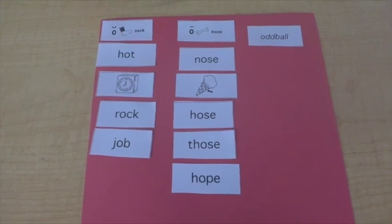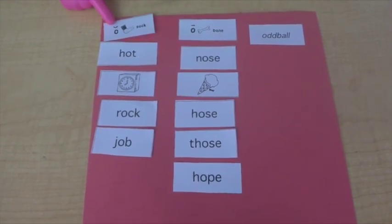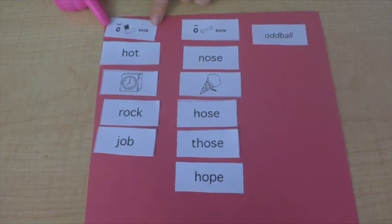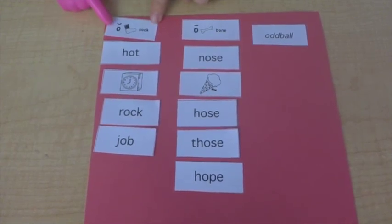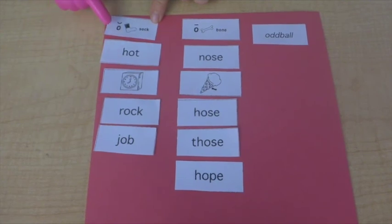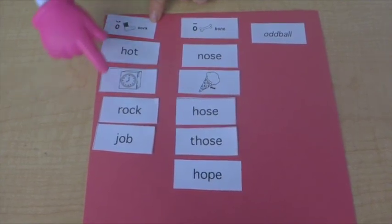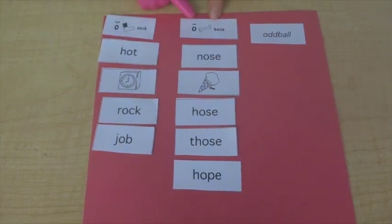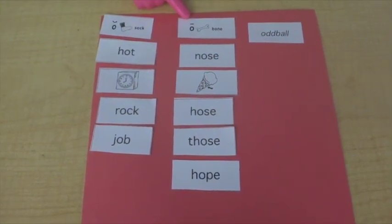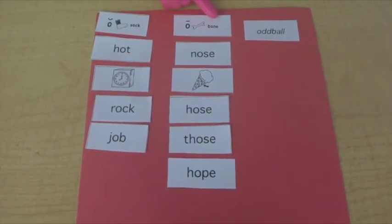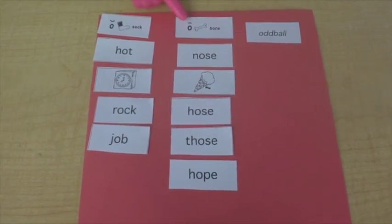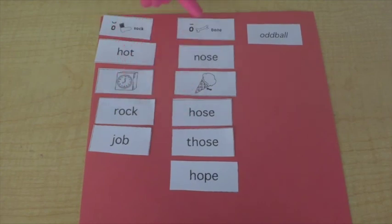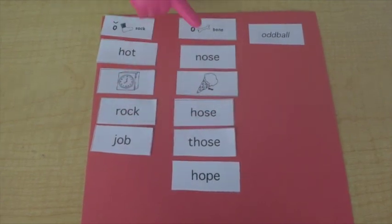Let's go through our patterns one more time. We have this one letter here that says ah as in sock. So we say ah sock, ah hot, ah clock, ah rock, ah job. Here we have this one letter saying oh when there's that E at the end. Oh bone, oh nose, oh cone, oh hose, oh those, oh hope.